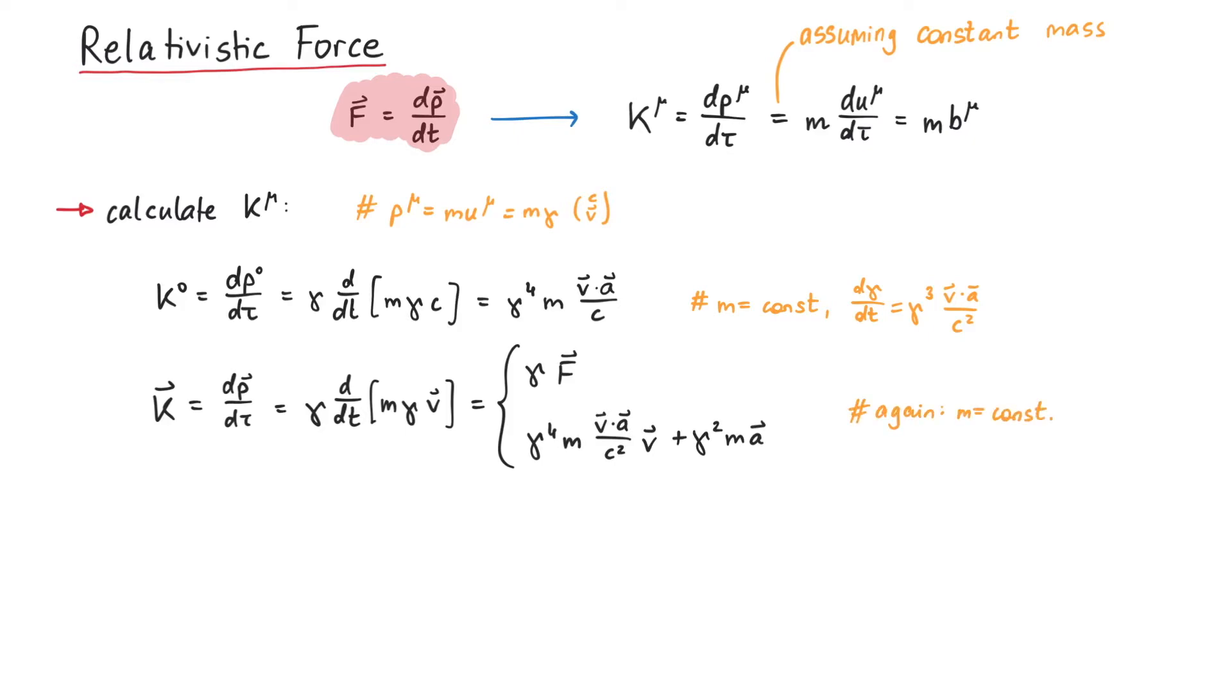Before we continue, compare the results of k0 and k with the expressions of the 4-acceleration b0 and b. As you see, the 4-vector version of Newton's second law still holds for constant mass.